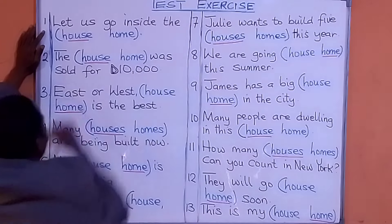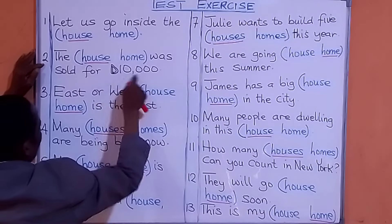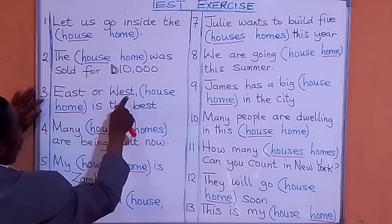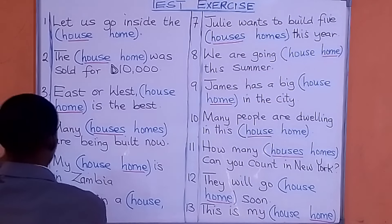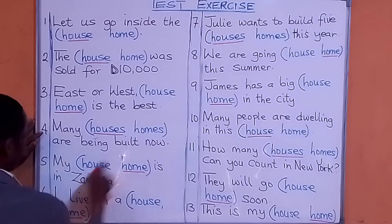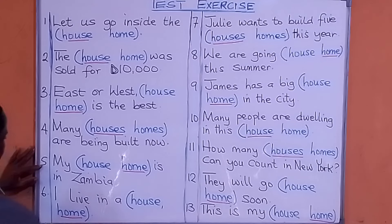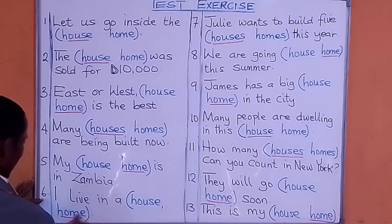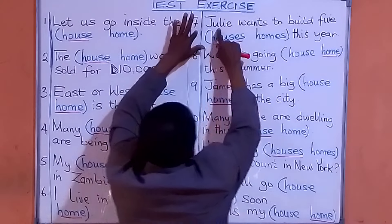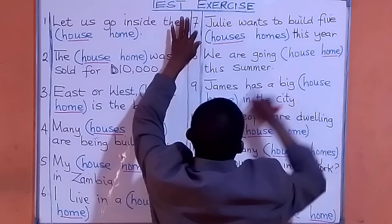Let us go inside the house. The house was sold for ten thousand dollars. East or west, home is the best. How many houses have been built now? My home is in Zambia. Julie wants to build five houses this year.